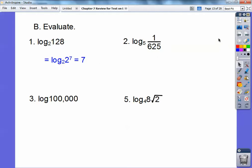So right here, I'm going to change that 625 to 5 to the 4th. So it's 1 over 5 to the 4th, which is 5 to the negative 4th. So the answer is negative 4, blah blah. If there's no number here, it's understood to be 10. This is 10 to the 5th right here. So that's 5, blah blah.